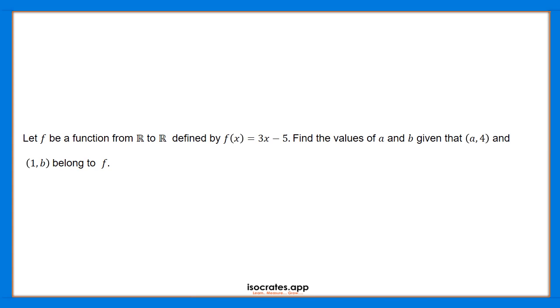of x equals 3x minus 5. Find the values of a and b given that (a, 4) and (1, b) belong to f. So f is a function from R to R defined by f(x)